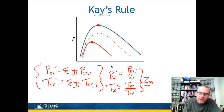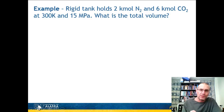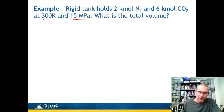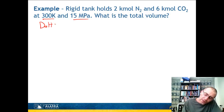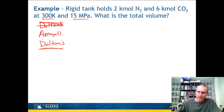You can use all three approaches. Kay's Rule is sometimes pretty good — sometimes even a little more accurate than Amagat's, and it tends to always be better than Dalton's. Now let's do an example from section 13.2 of the textbook. I want to use EES and show you how to approach the same problem using math, and then at the end show you a caveat with EES. The problem: we have a rigid tank with two kilomoles of nitrogen and six kilomoles of carbon dioxide at 300 Kelvin and 15 megapascals, and we want to find the total volume. We'll first solve it using Amagat's Law, then look at Dalton's Law — and this is where EES sort of falls on its face.